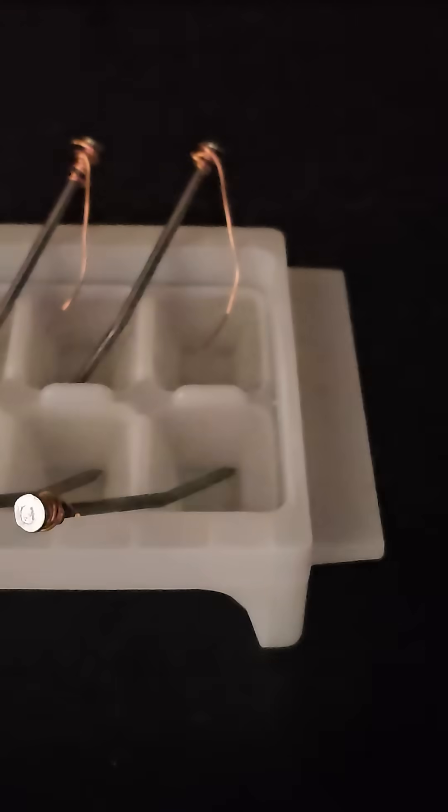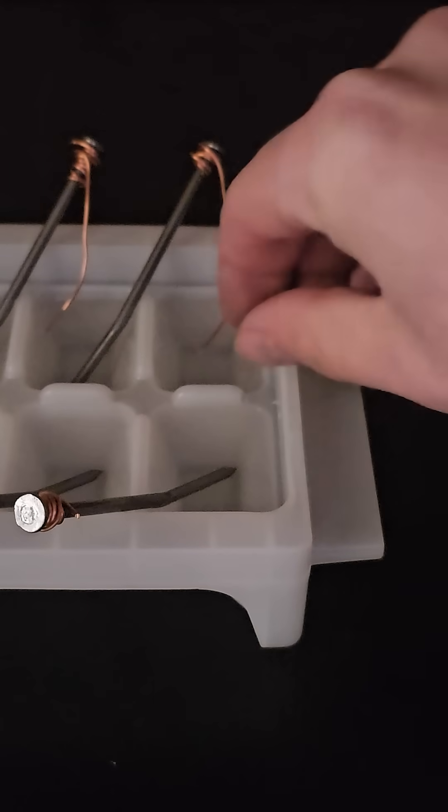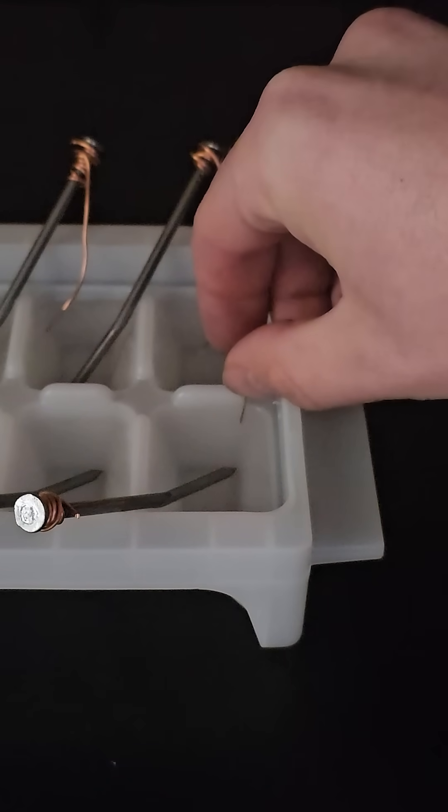Before doing so, I'll turn off the lights to hopefully see it better. Placing the LED with the leads dipping down into the vinegar and you can see it's lighting up. Turning the lights off fully and now you can really see it glow.